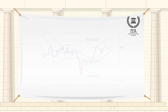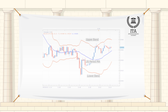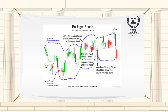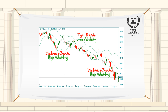Bollinger Bands are volatility bands placed above and below a moving average. Volatility is based on the standard deviation, which changes as volatility increases and decreases. The bands automatically widen when volatility increases and narrow when volatility decreases.